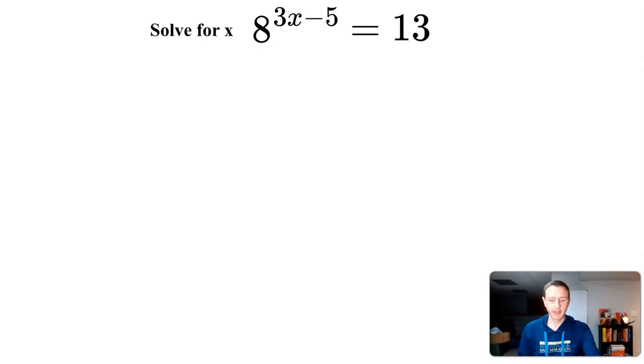Today we're going to solve for x in 8^(3x-5) = 13. The first problem is that x is locked in the exponent of 8. We have 8 to the 3x minus 5, x is all the way up there. We need to finish with x equals something. That's our end goal.